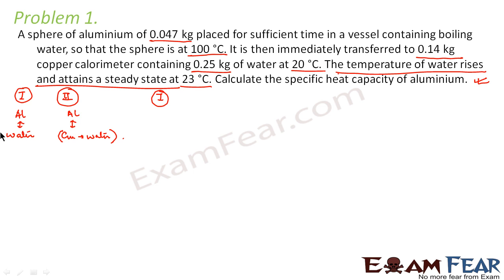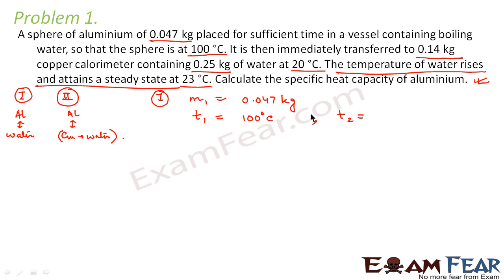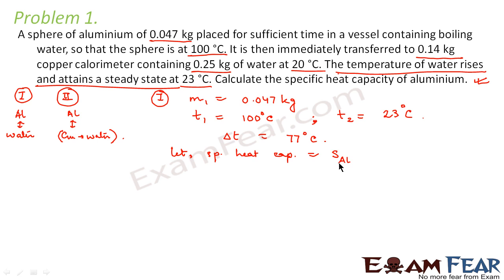Let us look at the first part: initially when the aluminium sphere is placed in a vessel with boiling water. The mass is 0.047 kg, the initial temperature is 100 degree Celsius, and the final temperature is 23 degree Celsius. The change in temperature delta T is 77 degree Celsius. Let us suppose the specific heat capacity of aluminium is denoted by S_AL. What would be the amount of heat lost by the aluminium sphere?